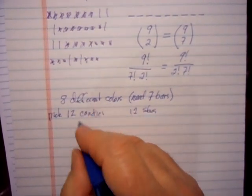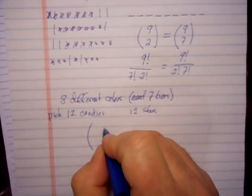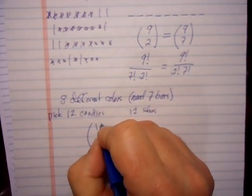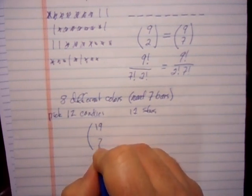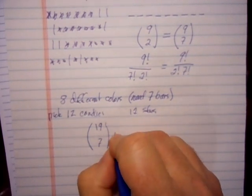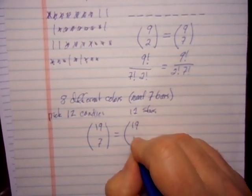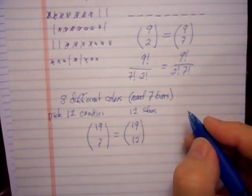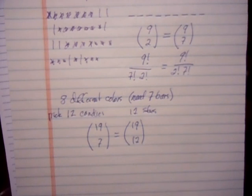So to count all the different codes there are going to be 19 different slots, and I need to pick seven of them to be bars, or equivalently 19 slots and I need to pick 12 of them to be stars. You can generalize the formula from there. That's the end of the video.